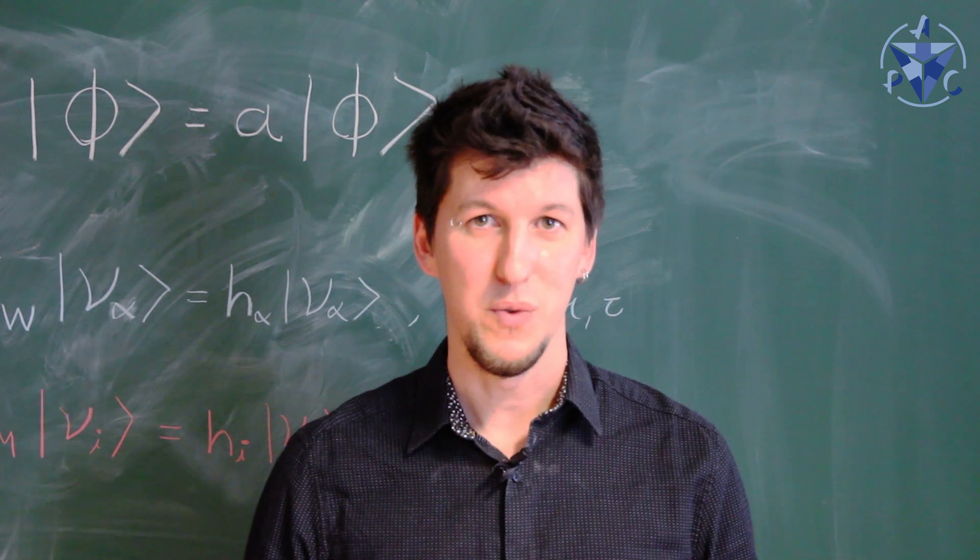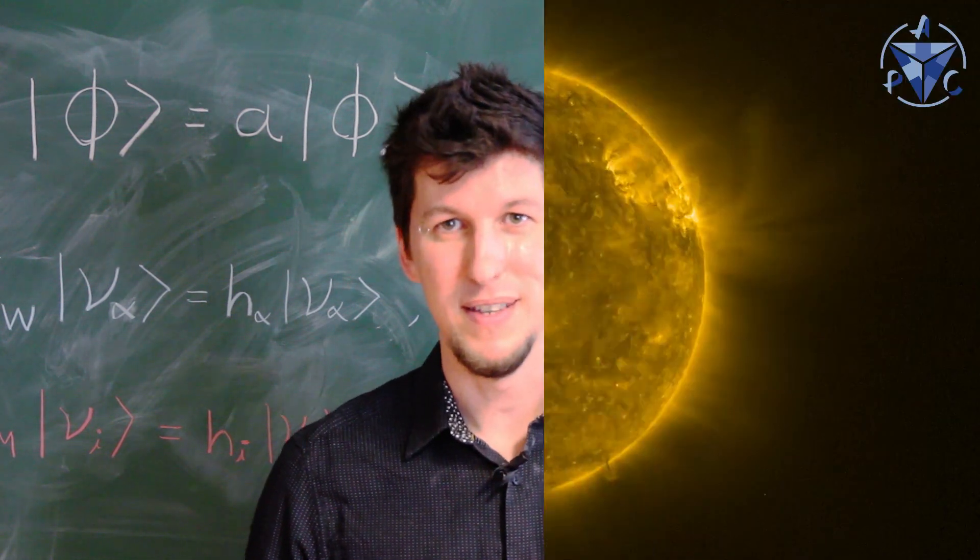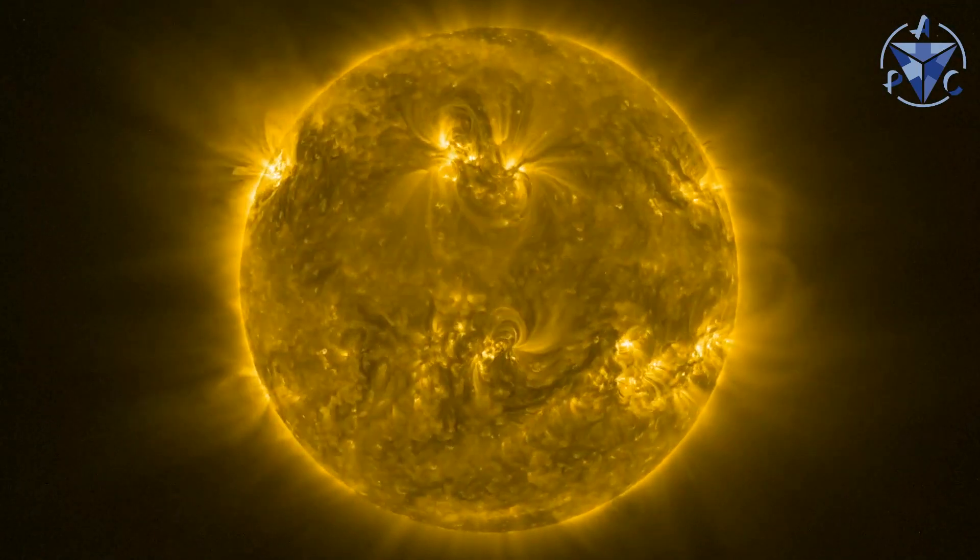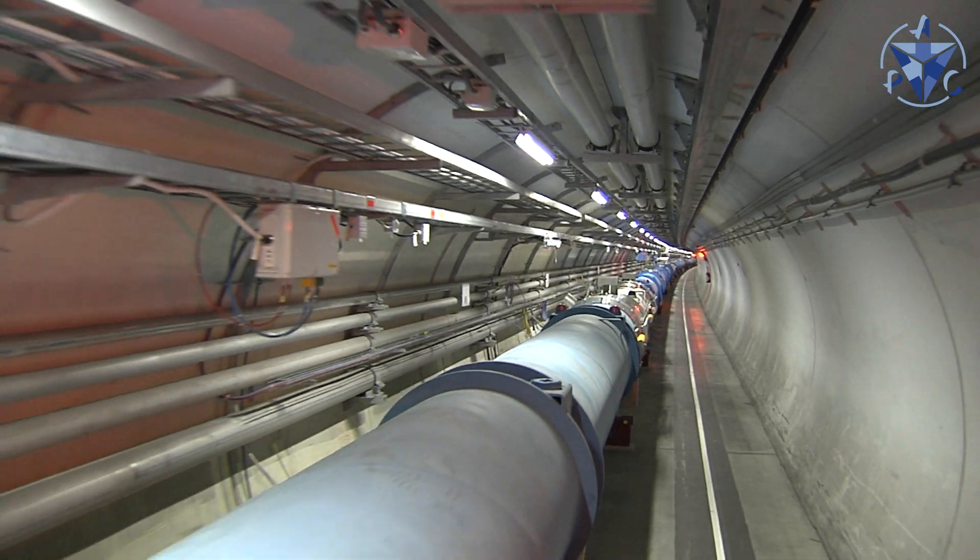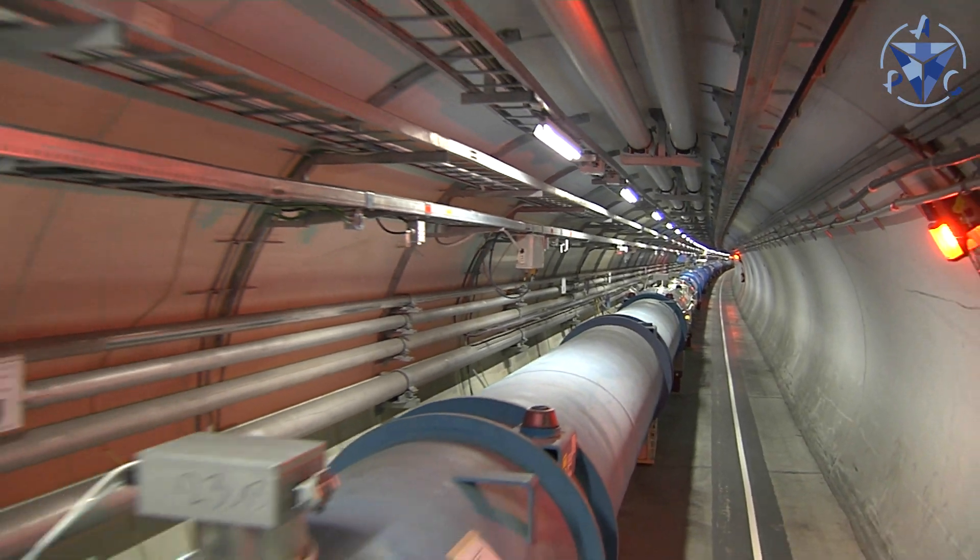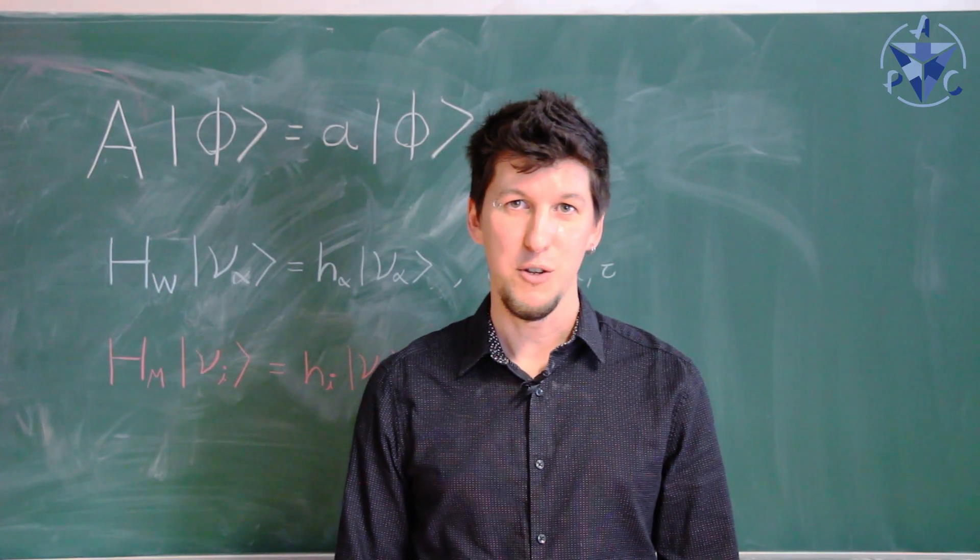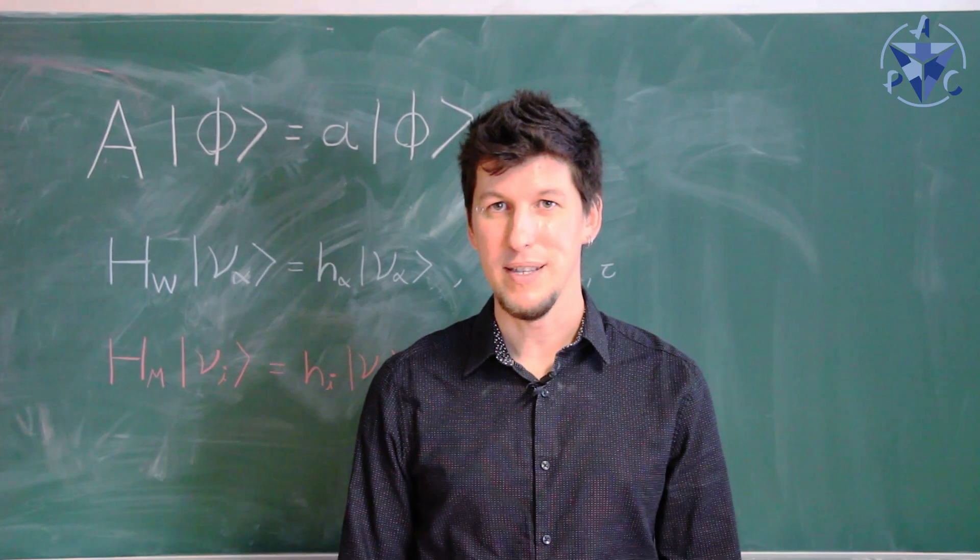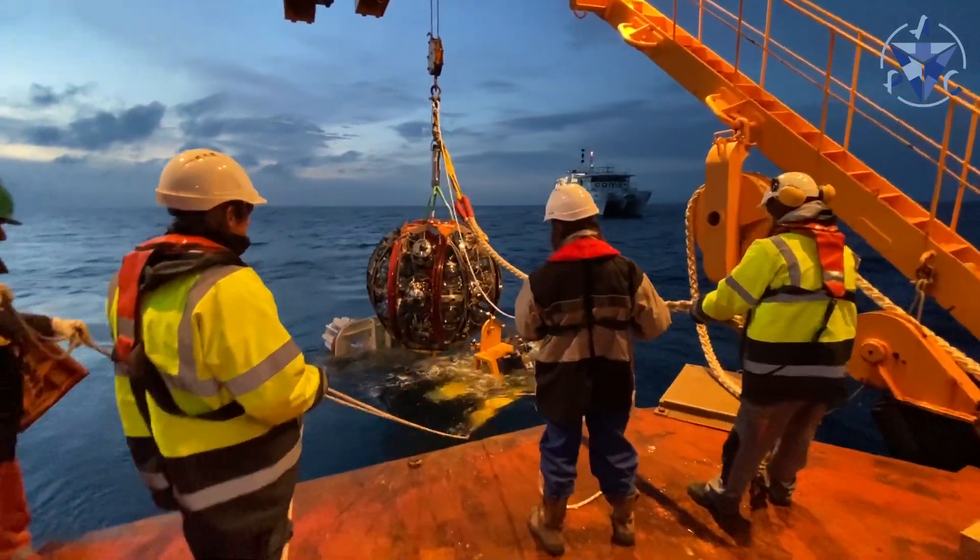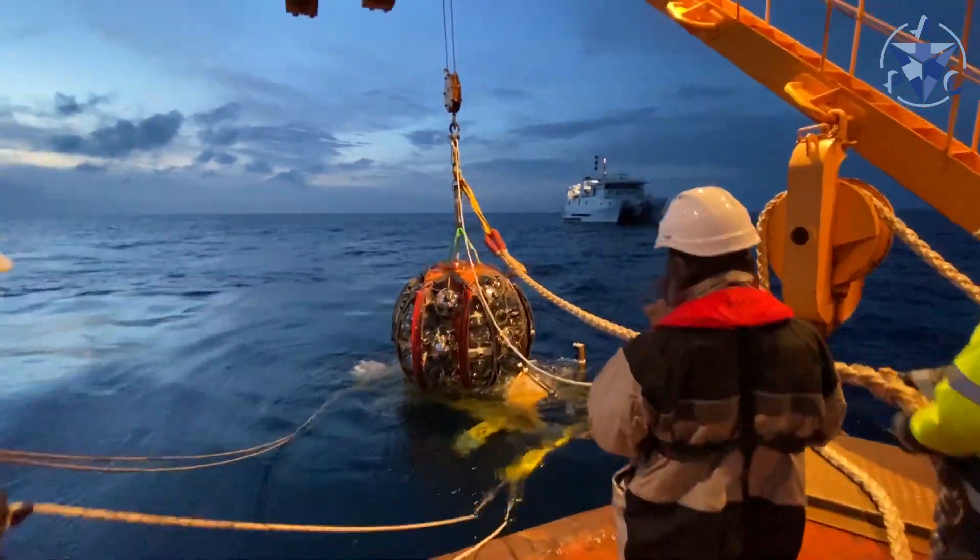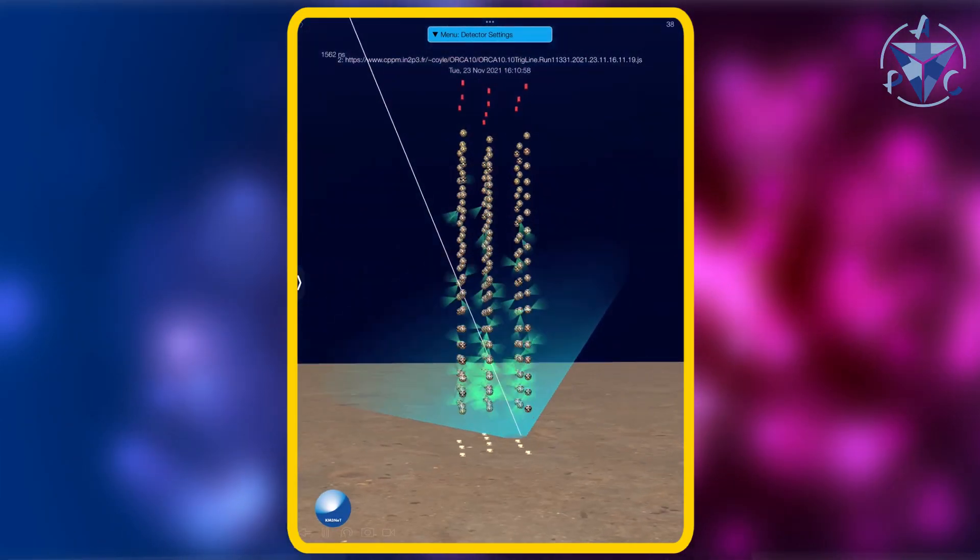To study neutrinos, we look for them in many places. They are produced in the center of the Sun, in extreme astrophysical events like supernovae, and we can make them in particle accelerators here on Earth. Here at APC, we study neutrinos that are produced by cosmic rays in the atmosphere. For that we use KM3Net, which is a neutrino telescope that we are building in the bottom of the Mediterranean Sea, more than 2,000 meters deep.